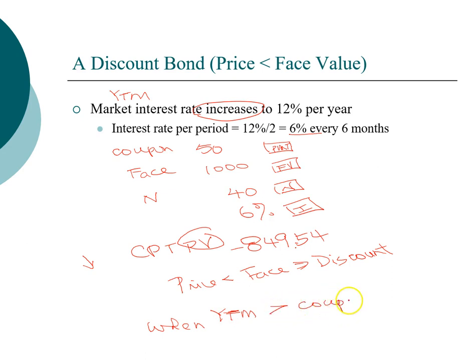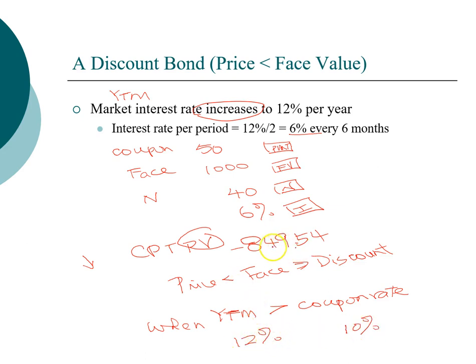This confirms finance theory: when interest rates go up, present value goes down. A bond sells at a discount if and only if the yield to maturity is greater than the coupon rate. In our example, the coupon rate stays at 10% — it doesn't change once the bond is issued — but the yield to maturity has risen to 12%, and we see the price is now less than the face value.